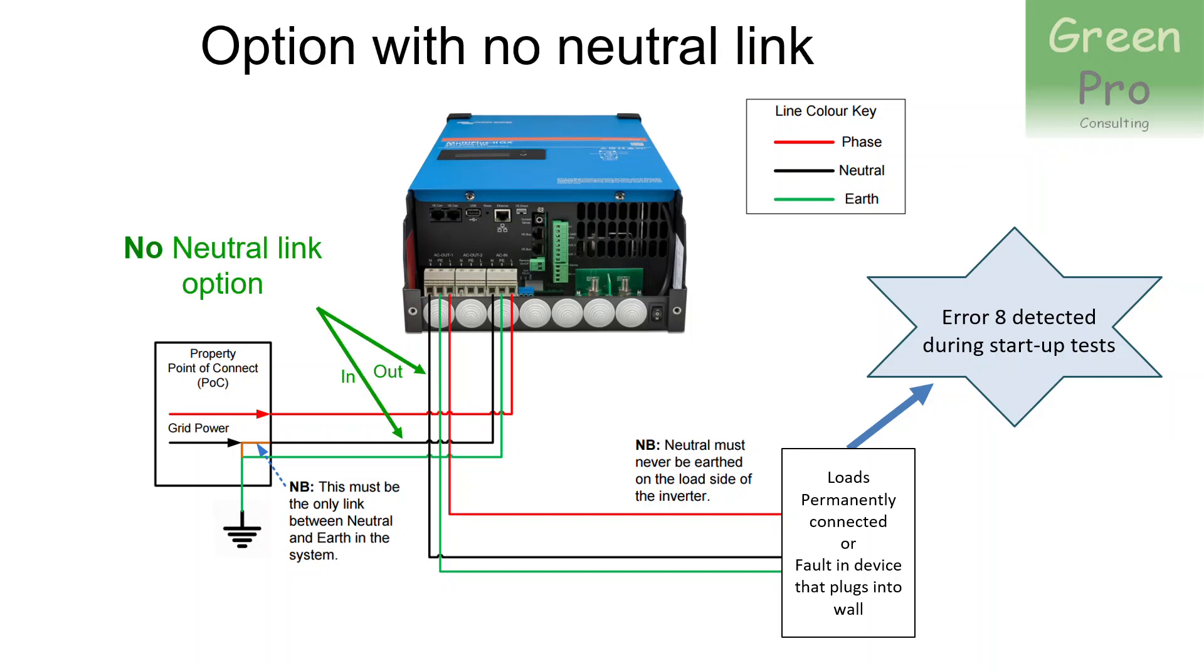So I think at some stage Victron realized that they made a mess up of this. And then they defined two work modes. The one is that you can, if you consider that to be the neutral coming into the inverter, you can put a link between the neutral coming into the inverter and the neutral coming out of the inverter, going to your output loads. Or you cannot have a link in there. Now, if you don't have an Error 8 problem, in other words, a leak current between these two lines, then you simply leave the link out and you can ignore the whole problem. If you do have a problem and your inverter keeps on tripping and then retrying to boot up, then you can put a link in there.